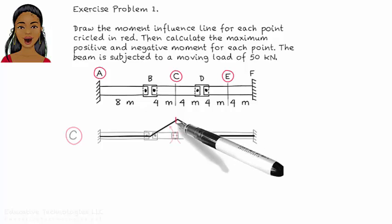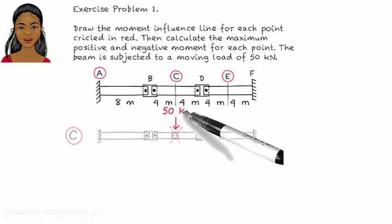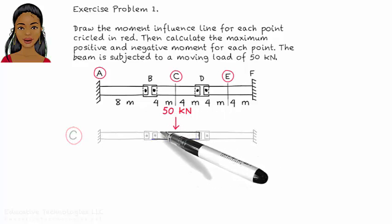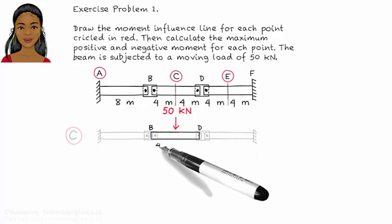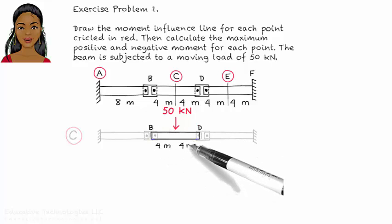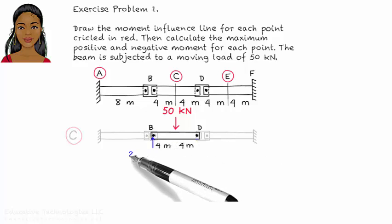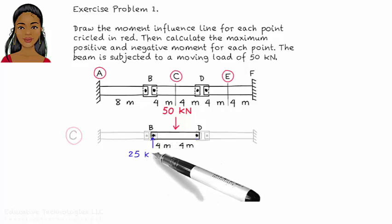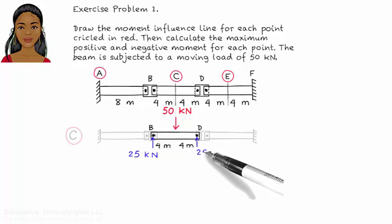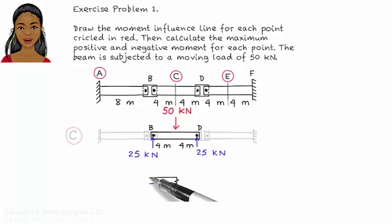To calculate the magnitude of the positive moment, place the load at C and analyze the beam. Draw the free body diagram of segment BD in order to determine the shear force at B and D. Now calculate the bending moment at C.